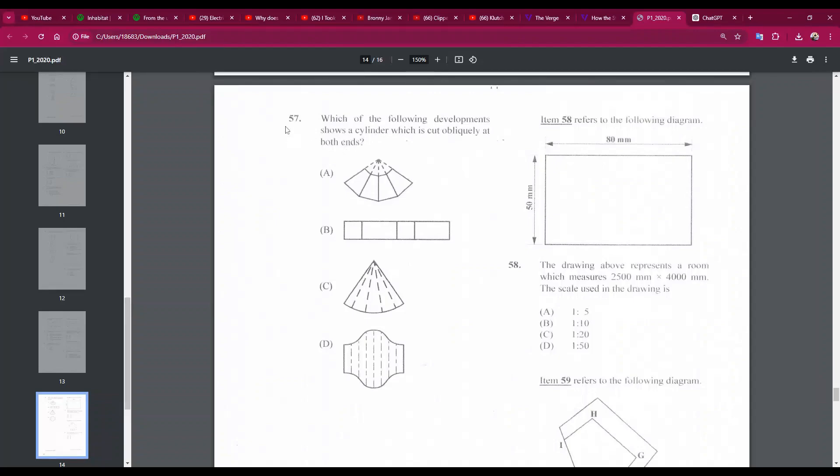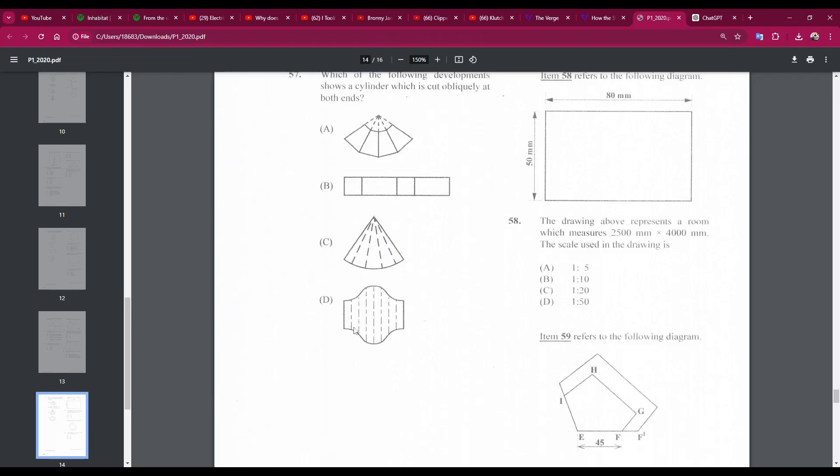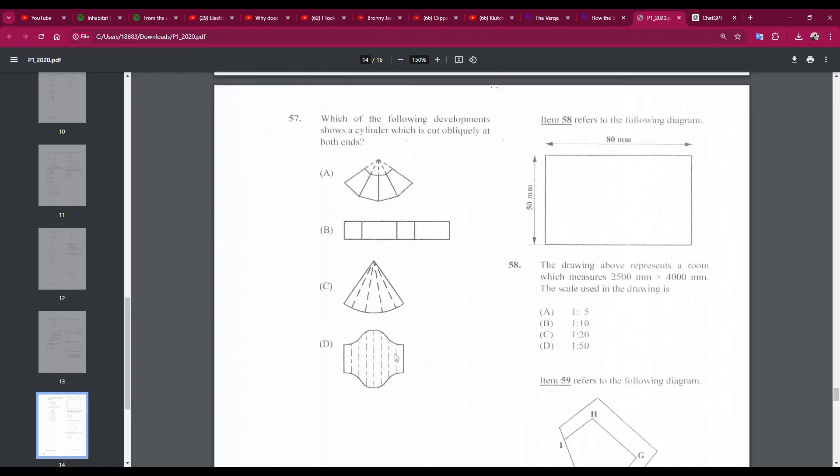Number 57: which of the following developments shows a cylinder which is cut obliquely at both ends? Okay, this is not a cylinder, not a cylinder. The answer is D, 57D. This is the only cylinder here. It's cut at both ends.